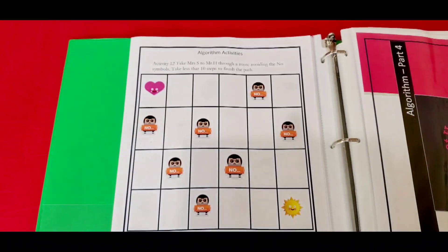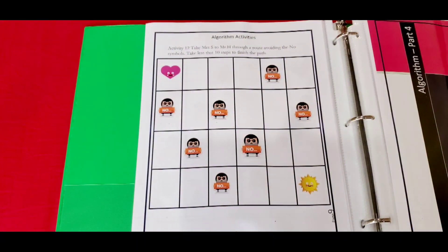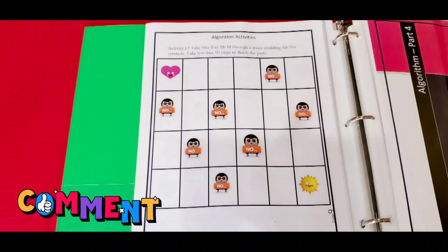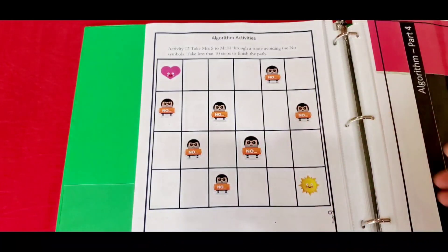There are 12 activities in total and primarily these activities are just for the kids to understand how to navigate a path and how to go. What are the ways, how are they going to take different steps without bumping into the obstacles?